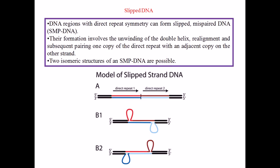Now let us talk about the final discussion, which is about slipped DNA. What do we mean by slipped DNA? The name actually helps us to understand: slipped DNA is a part of the DNA which is formed due to the slipping of some part of the nucleotide sequences inside the DNA.